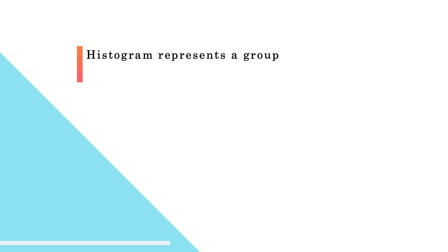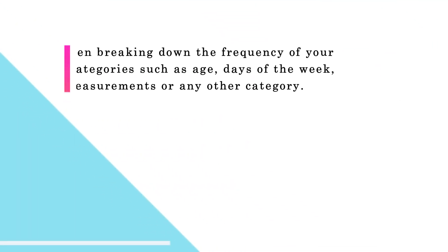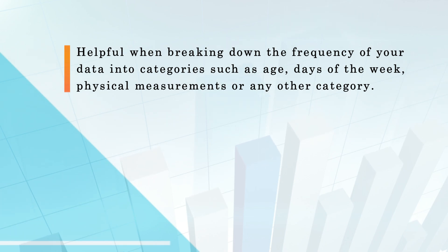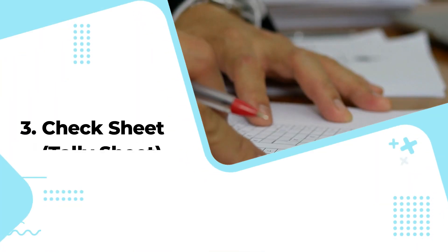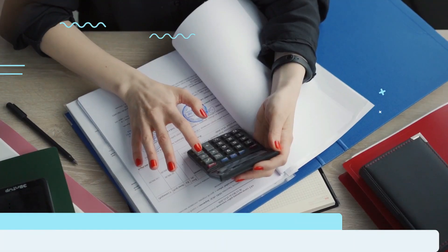With a structure similar to a bar graph, each bar within a histogram represents a group, while the height of the bar represents the frequency of data within that group. Histograms are particularly helpful when breaking down the frequency of your data into categories such as age, days of the week, physical measurements, or any other category that can be listed in chronological or numerical order.